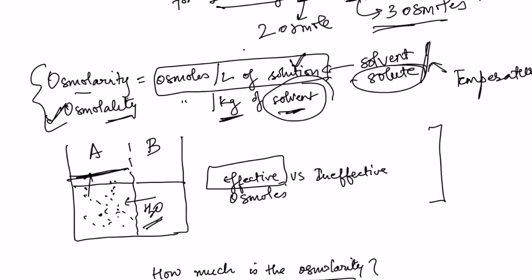On the other hand, suppose there is a solute that can cross the membrane. It will cross and equally distribute on both sides, so there is no net movement of water. Such a solute is known as an ineffective osmole. Examples are glucose and urea in the body.